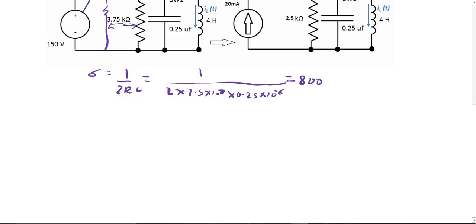And your omega is 1 over LC equals to 1 over L is 3 times 0.25 times 10 raised to negative 6. This equals to 1000.